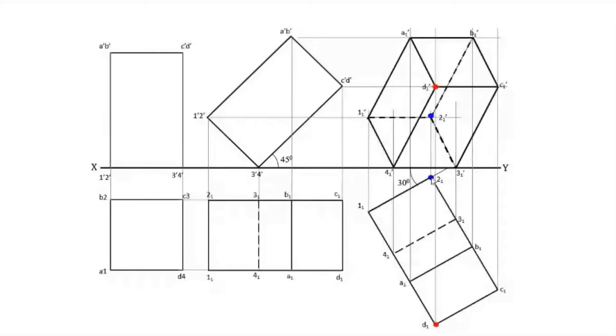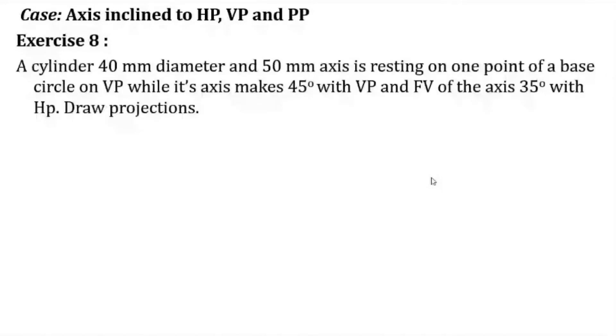Another example in which the axis is inclined to HP, VP, as well as the profile plane. The exercise: a cylinder of 40mm diameter and 50mm axis is resting on one point of a base circle on VP, while its axis makes 45 degrees with VP and the front view of the axis makes 35 degrees with HP. Draw the projections.